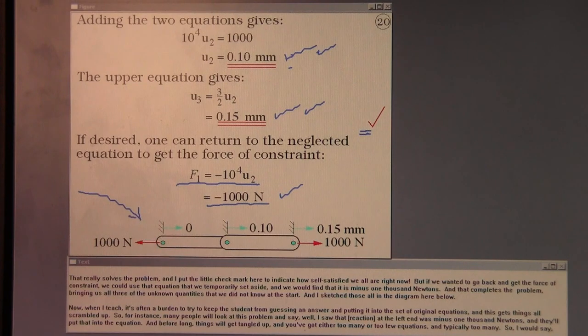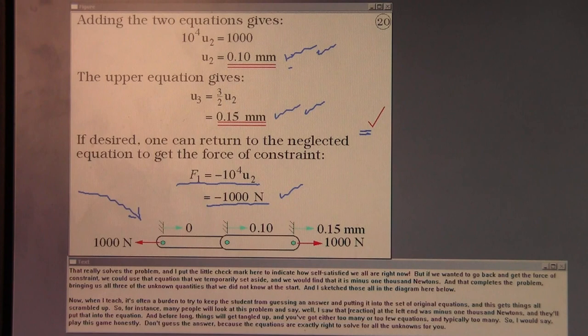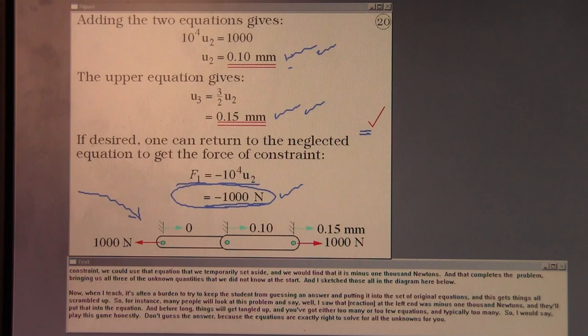Now, when I teach, it's often a burden to try to keep the student from guessing an answer and putting it into the set of original equations. And this gets things all scrambled up. So, for instance, many people will look at this problem and say, well, I saw that that load at the left end was minus 1,000 newtons, and they'll put that into the equation and before long things get tangled up and you've got either too many or too few equations, and typically too many. And so I would say play this game honestly. Don't guess the answer because the equations are exactly right to solve for all the unknowns for you.